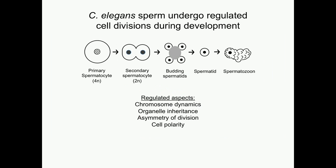In the Stanfield lab, we are studying the process of sperm development as a model for cell division, and it's a really interesting model for us because it's regulated in many different ways. Even though there are many interesting questions I could ask about the molecular mechanisms that guide this process, one thing I've been particularly interested in is trafficking. Our lab has historically been very interested in the last step of the process — the transition from immotile spermatids to motile spermatozoa.